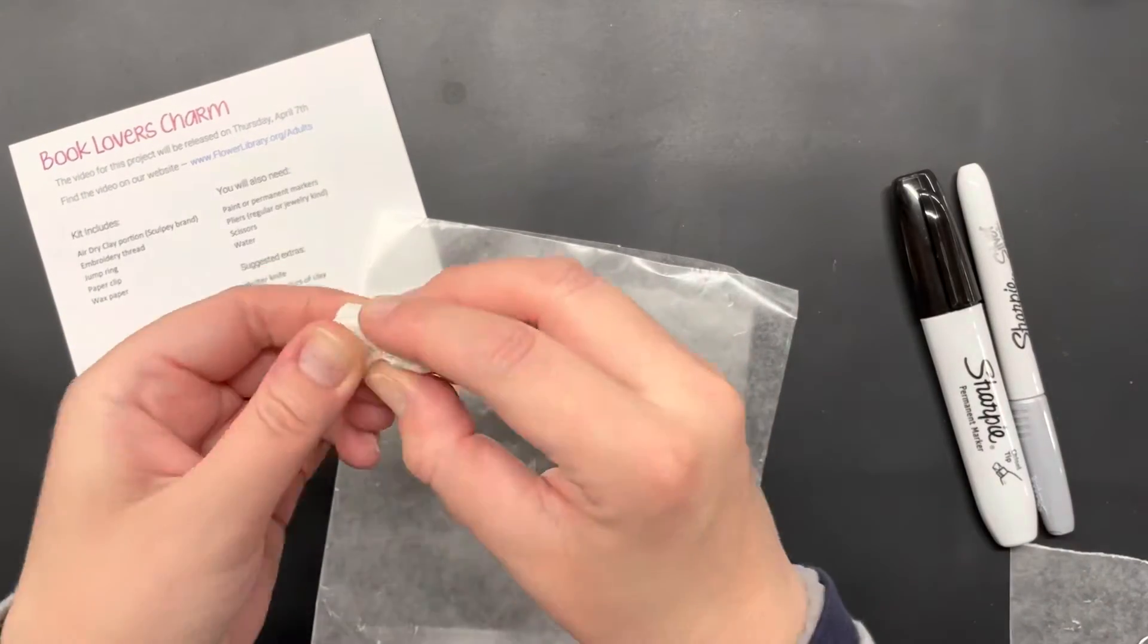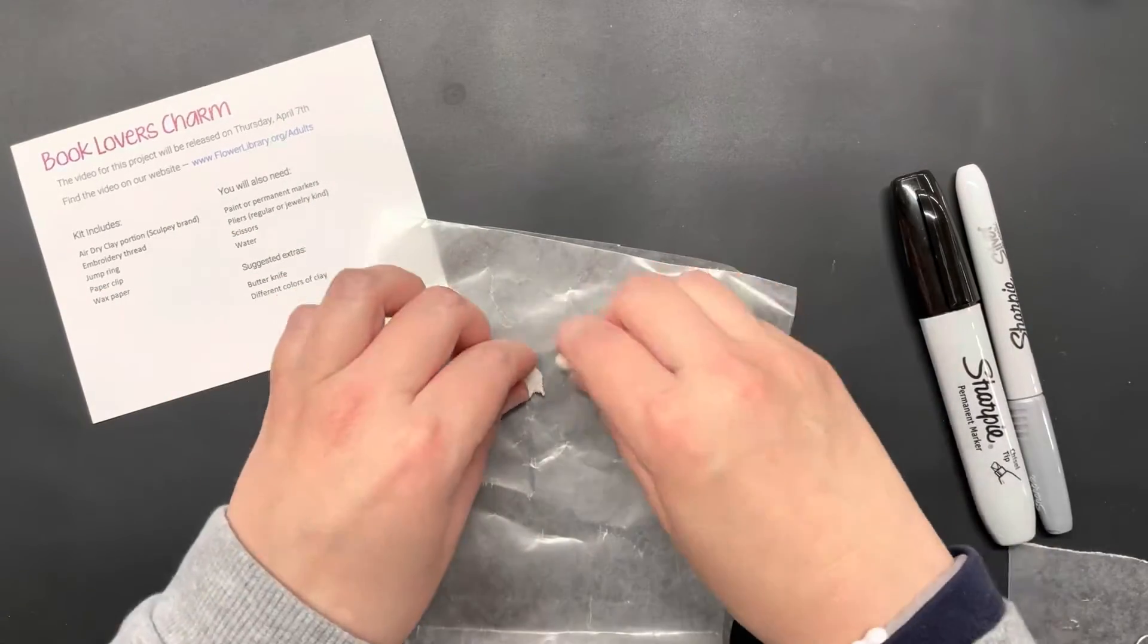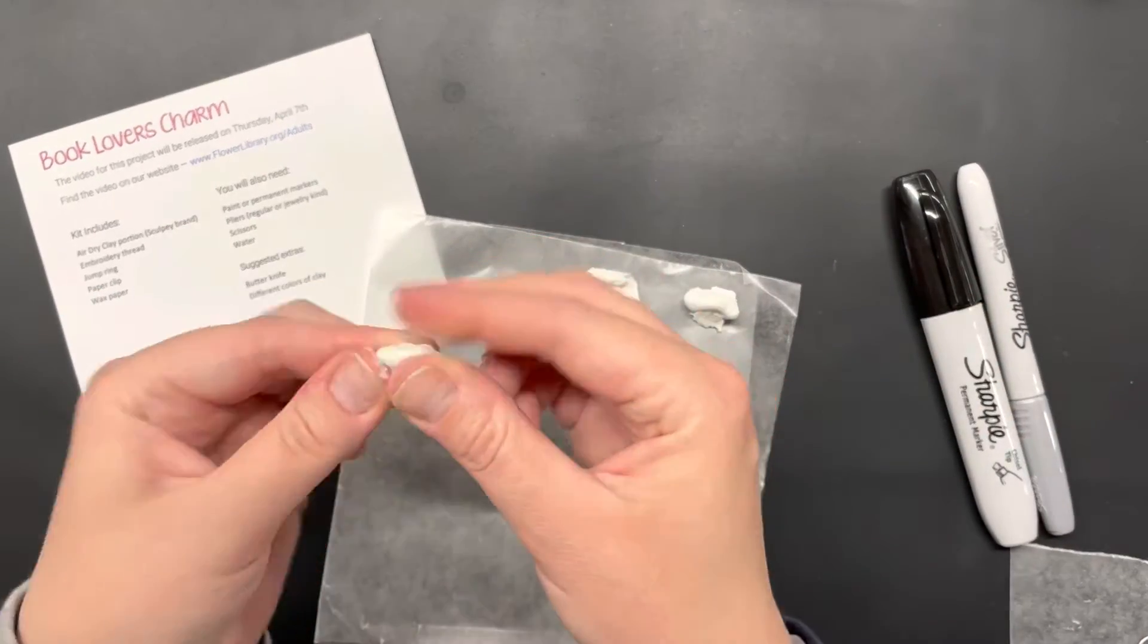To get started I'm just going to break off a piece of this clay and actually divide it into three portions. You can have three the same size books, three different size books, it's really going to be up to you. I'm just going to show you how I did the basic shaping for one book.